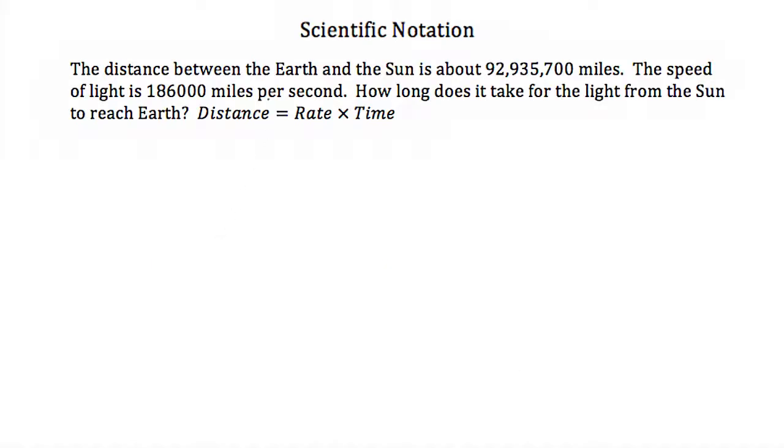Well before I said scientific notation is useful when you have very large numbers. Well here we have that the distance between the earth and the sun is about 92,935,700 miles, and the speed of light is 186,000 miles per second. So how long does it take for the light from the sun to reach earth?